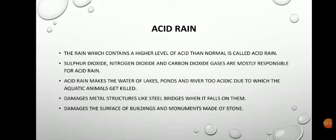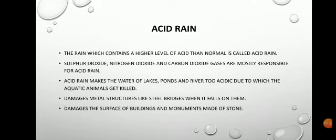Acid rain makes the water of lakes, ponds, and rivers too acidic, causing fish and other aquatic animals to die. It eats up the leaves of trees, gradually killing them. Acid rain also damages crop plants in the field, corrodes metal structures like steel bridges, and damages the surfaces of stone buildings and monuments. This concludes our discussion on acids. In the next class we will discuss bases. Thank you, everyone.